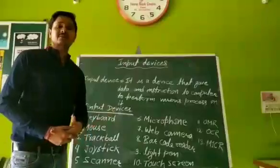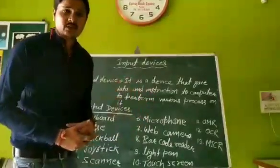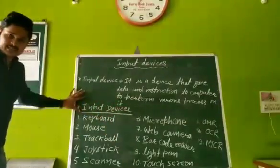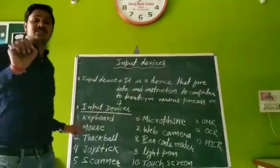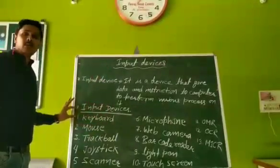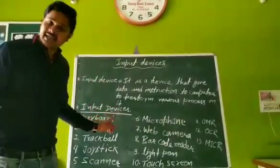Generally in our life and various fields we use a number of input devices. So we will discuss these input devices one by one. First of all, keyboard. Keyboard is the most important input device. It has about 104 to 108 keys. It is used for writing text.